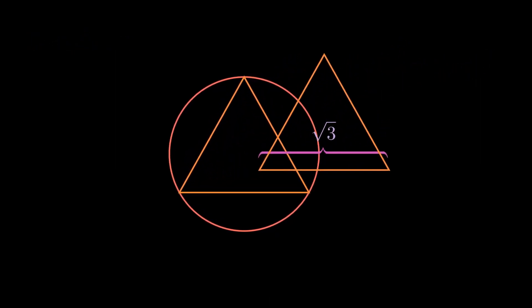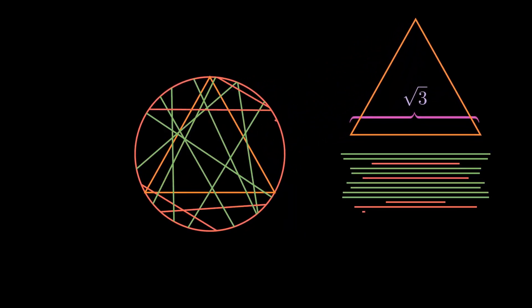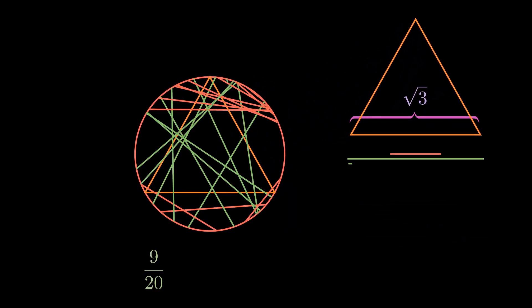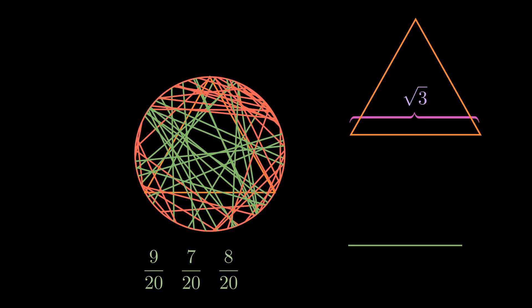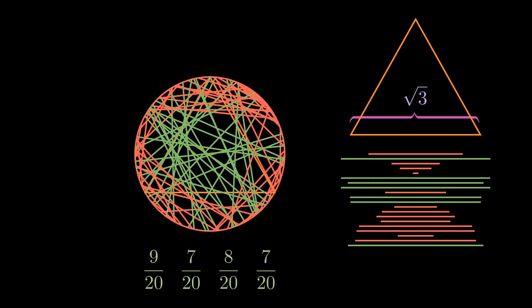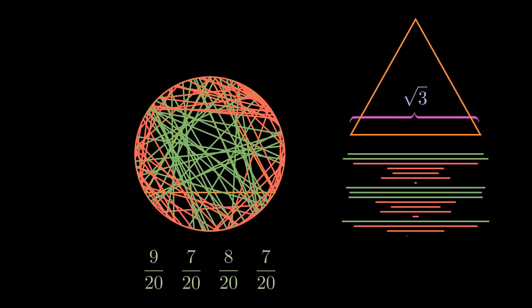Suppose, then, that a chord of the circle is chosen at random. What is the probability that the chord is longer than the side of the triangle? In other words, what proportion of all the possible chords to be drawn on that circle exceed the square root of 3?